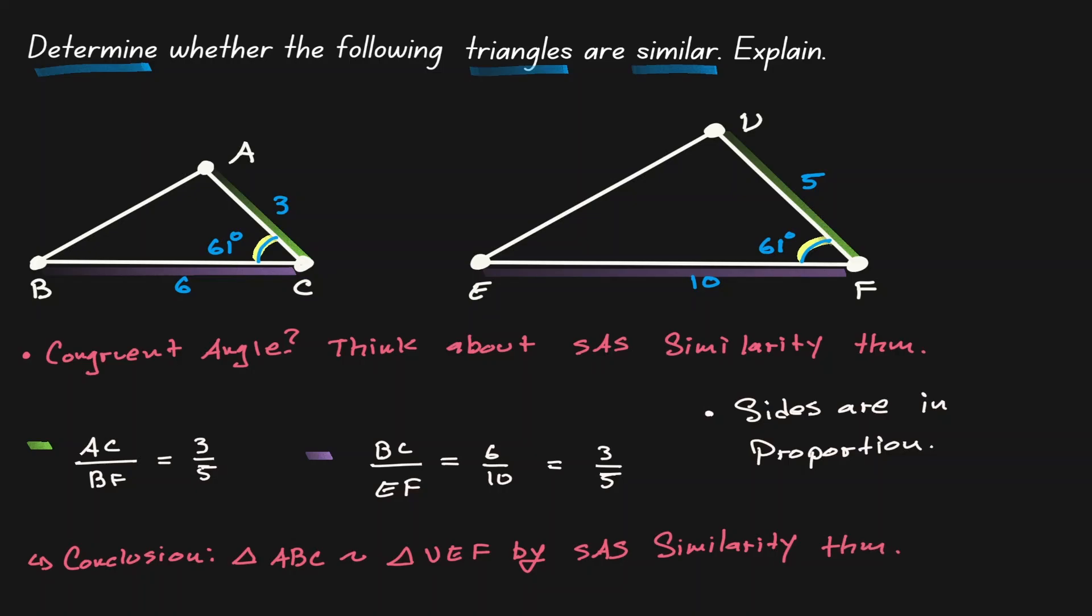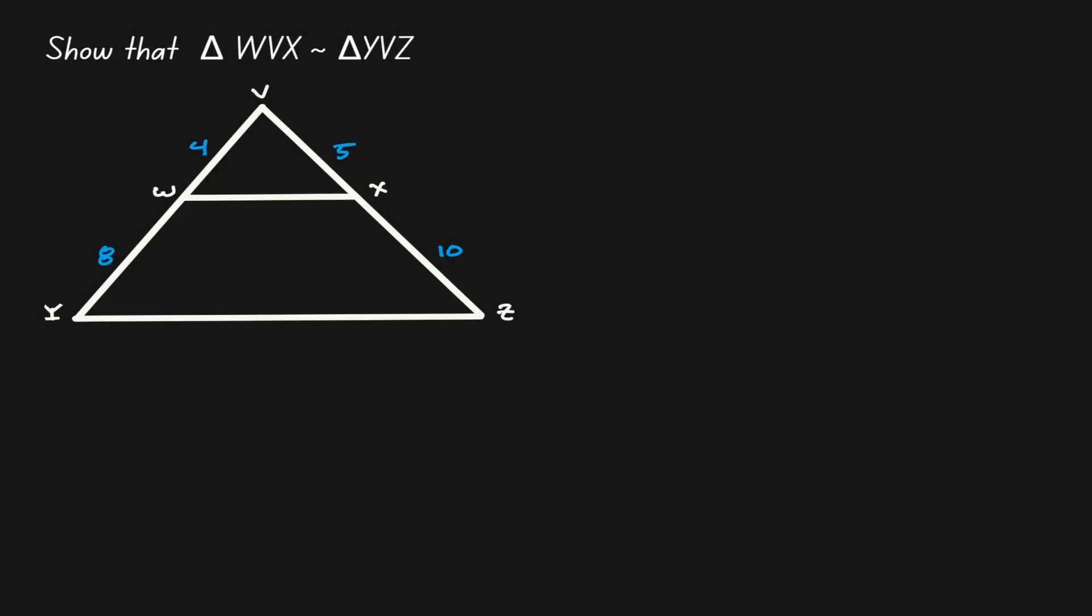Let's take a look at another example. In this example, we want to show that triangle WBX is similar to triangle YBZ. And a general strategy is that when two triangles are overlapping with each other, it's better to just draw them separately. So let's draw them separately.